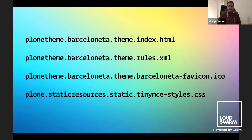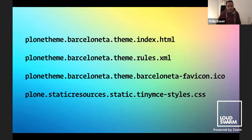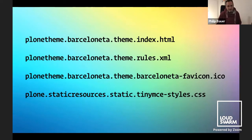These are four examples of files that you can override: the index HTML, the rules XML, the Barceloneta favicon — which is the only way you can actually override the favicon in Plone without creating a custom Diazo theme — and last but not least, the TinyMCE styles CSS file, which is otherwise also un-overwritable, and which gives you custom styles in your TinyMCE editor.